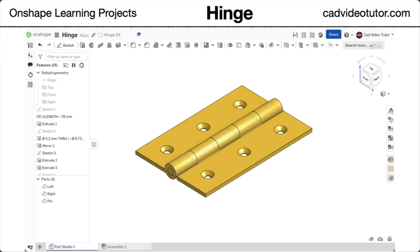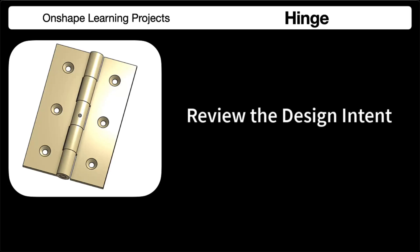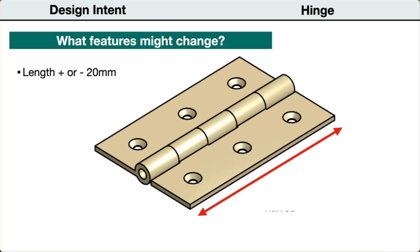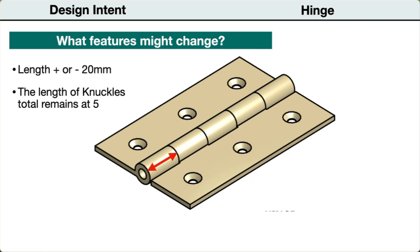Now you are ready to begin the project. Before we model the part in Onshape, we have to establish our design intent. We want our model to be flexible to possible design changes. First, we can identify any parameters that might change during the design process. For this hinge, we may need to adjust its length — in a range of 20 millimeters larger or smaller.